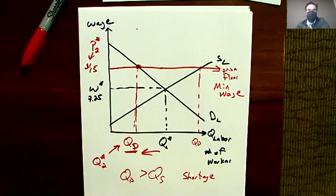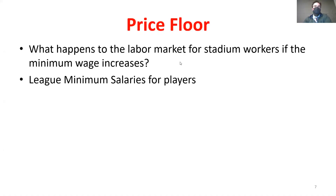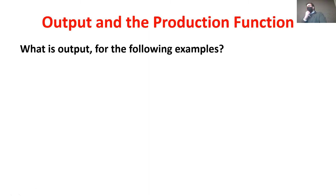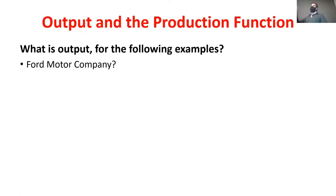Now let's think about what the output of sports teams or leagues is — it looks a little different from traditional companies. Ford Motor Company produces cars and trucks — pretty easy. Facebook's output is users on their network. Ball State's output is students — they're trying to produce higher quality graduates with better placements. What about Alabama University football? You could think about wins, but really the production at the most basic level is providing games — and maybe providing quality games.